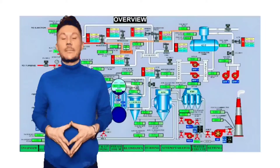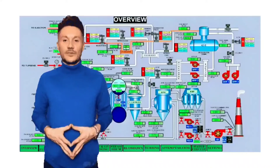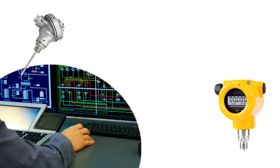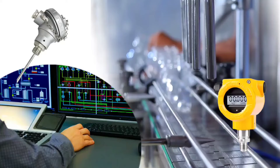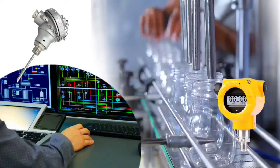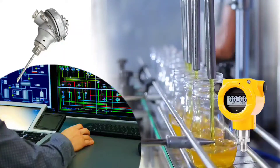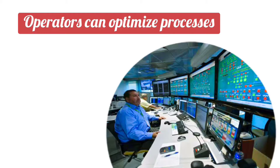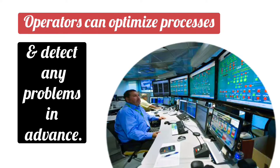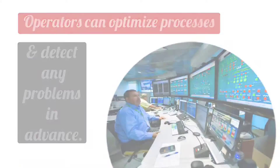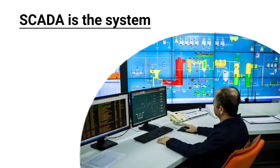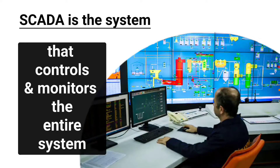SCADA has become a little advanced. It helps in monitoring and controlling the entire system. It collects data from sensors and machines, then analyzes that data and gives real-time information to operators. With SCADA, operators can optimize processes and detect any problems in advance. HMI is an interface that connects the operator to the machine, while SCADA is the system that controls and monitors the entire system.